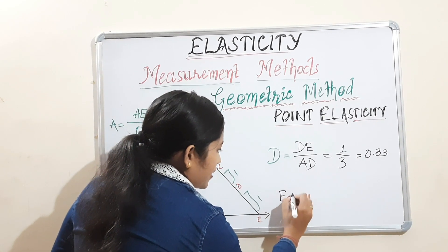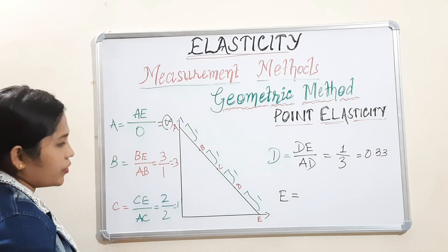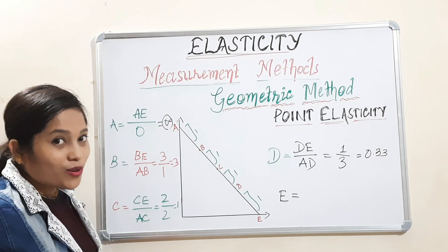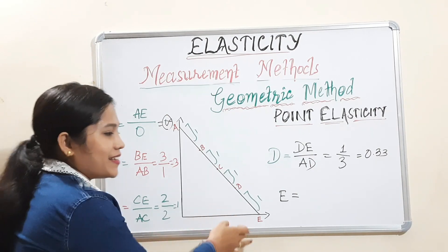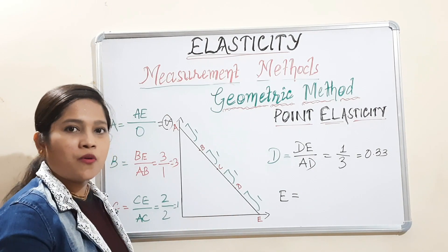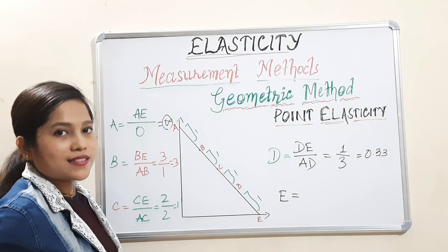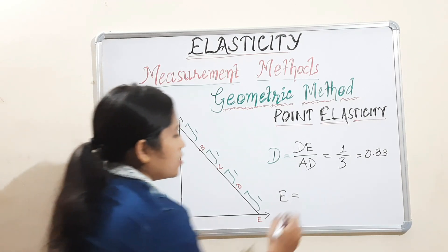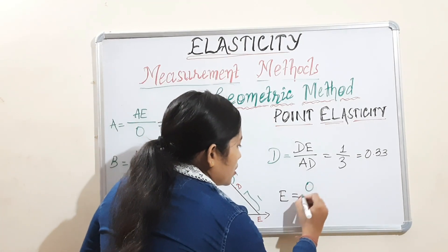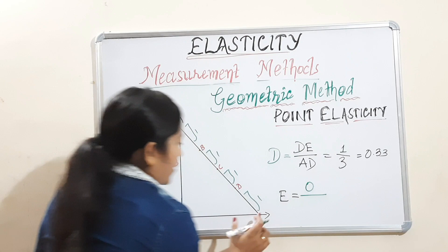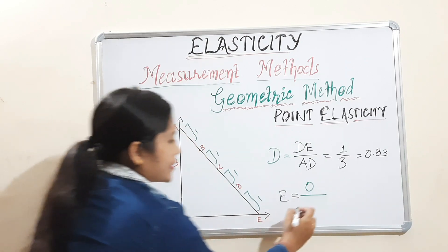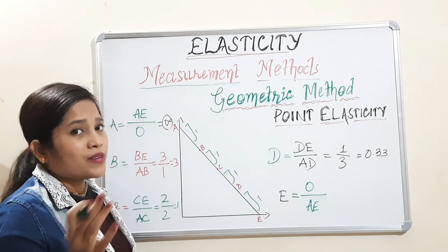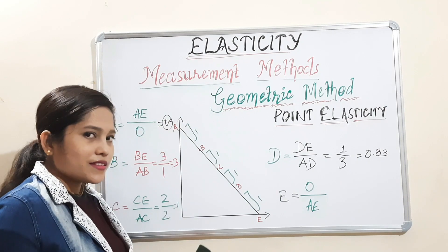Next is point E. At point E, there is no lower segment because E is the lowest point. So it will be 0 divided by the upper segment AE. 0 divided by any number is 0.